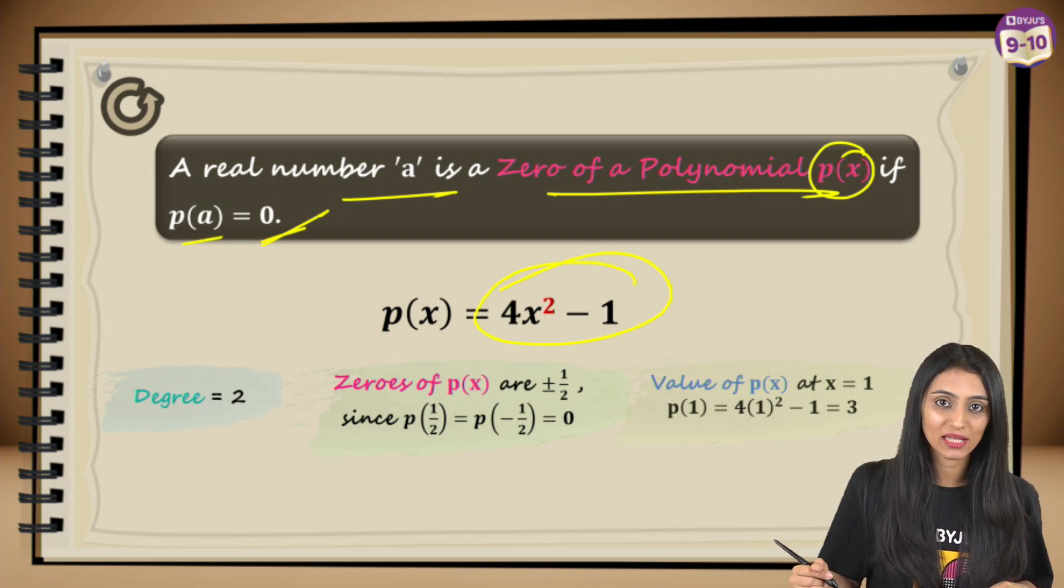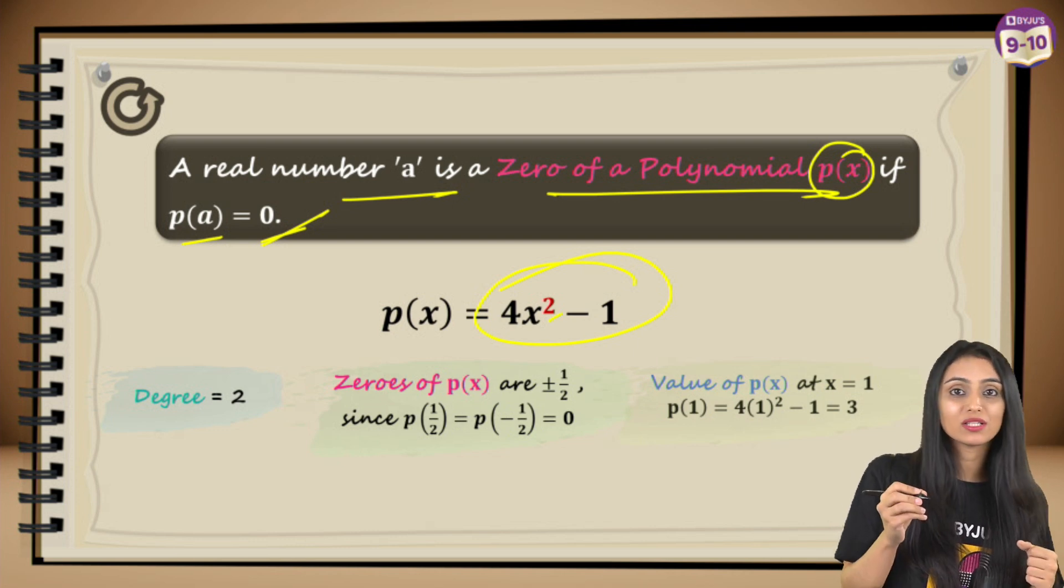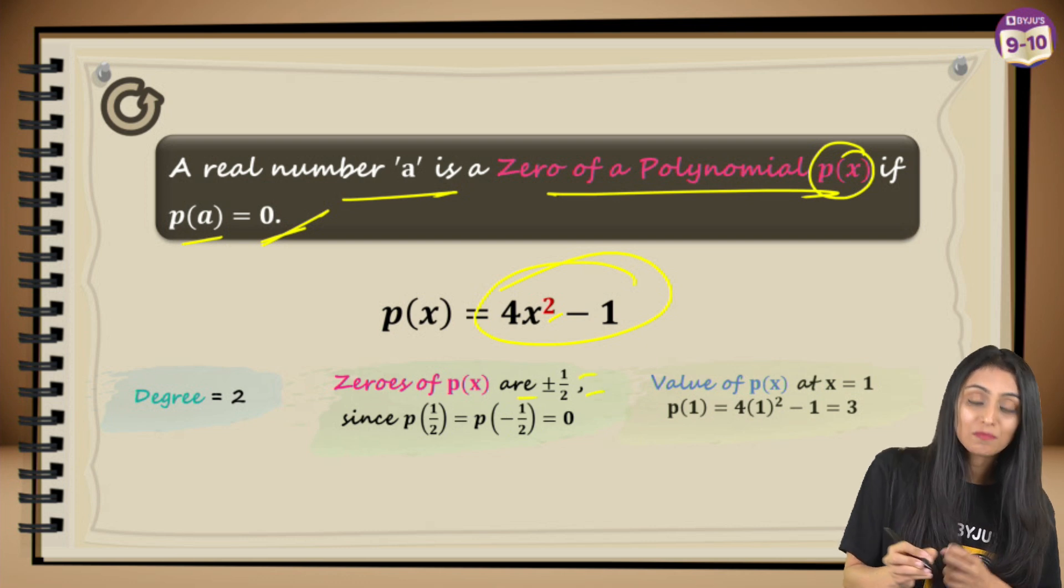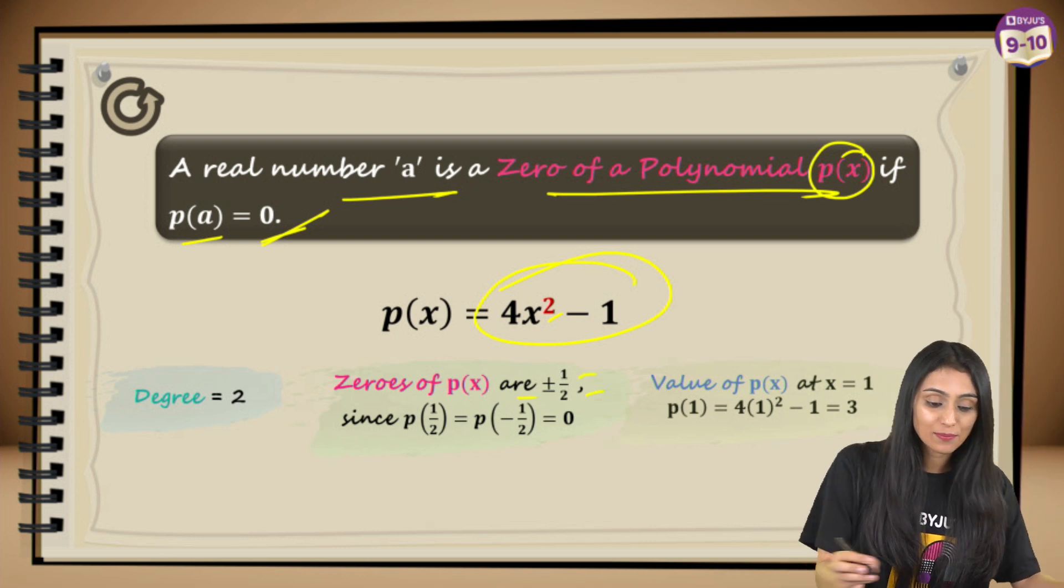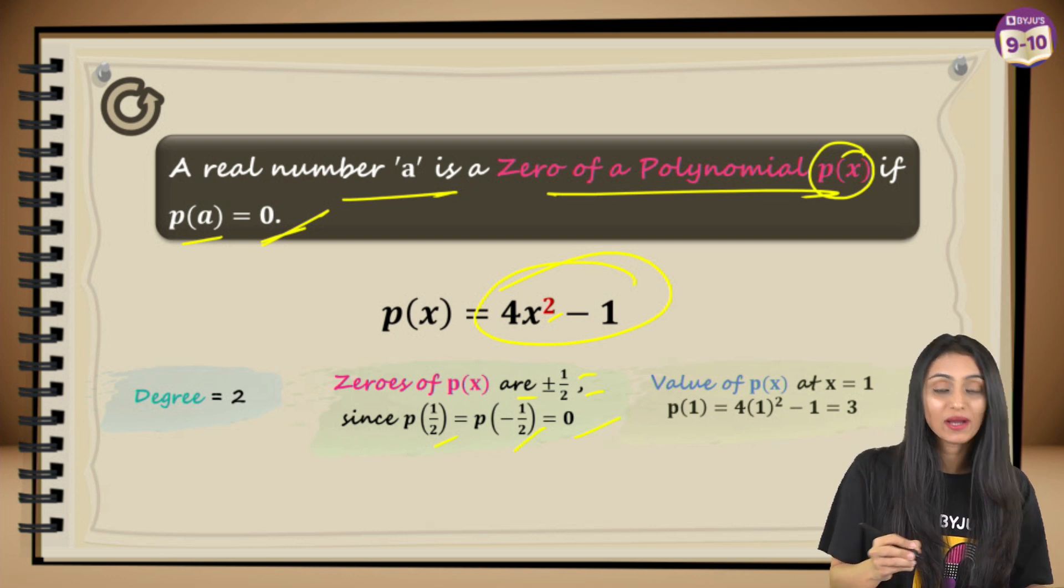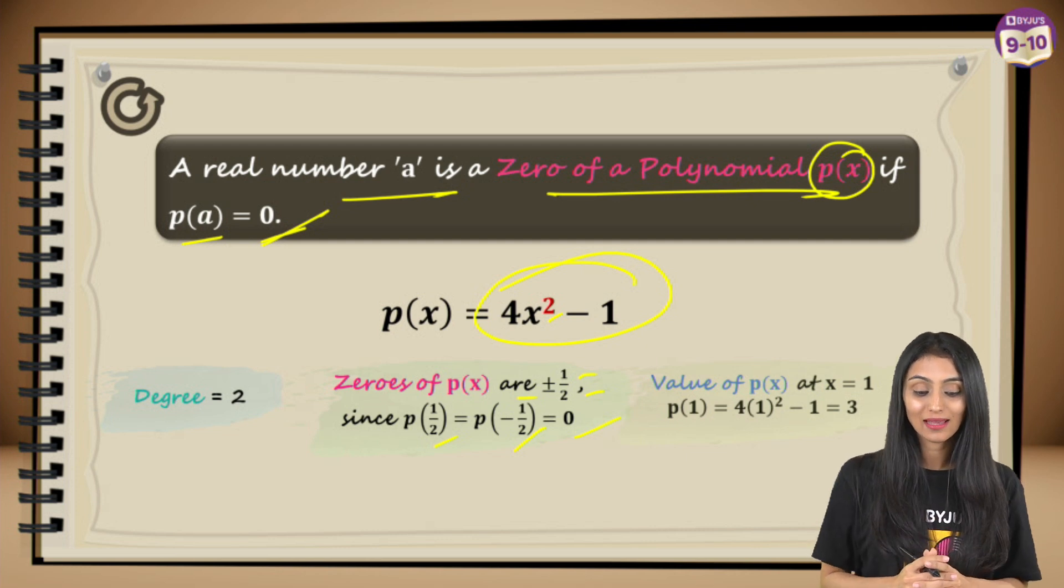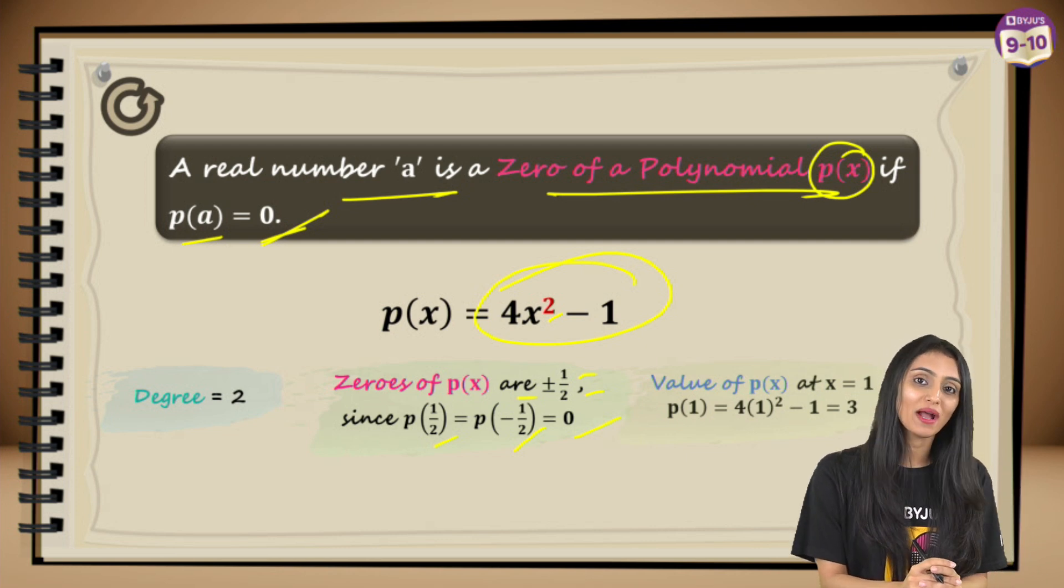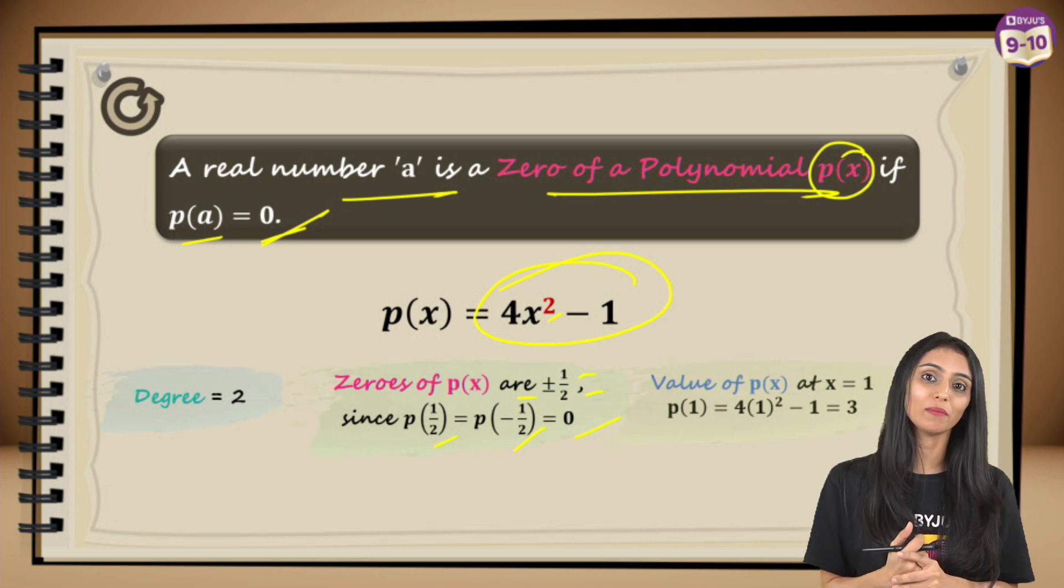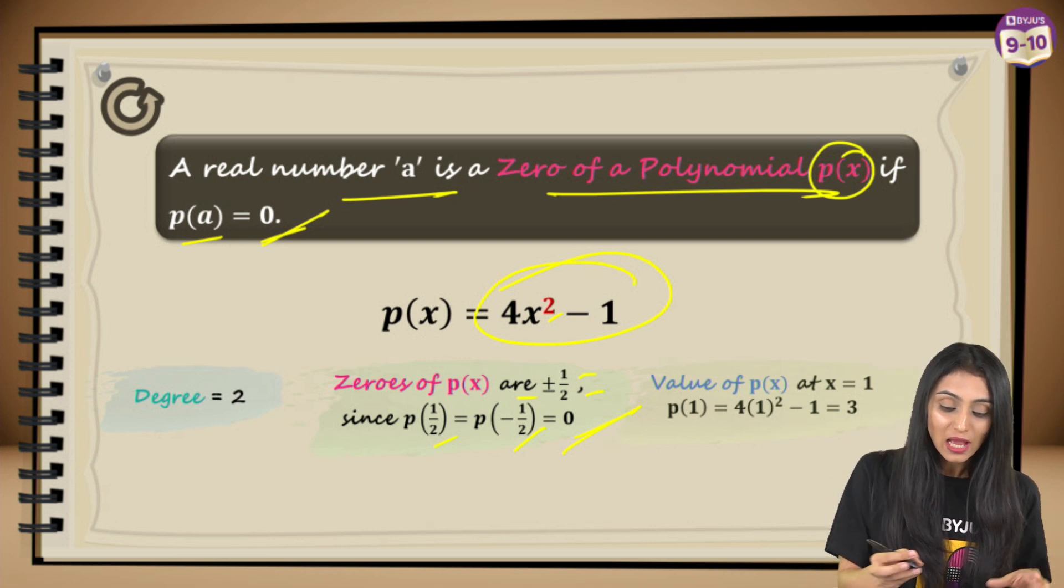To understand this better, take a look at this example. We have this polynomial p(x) = 4x² - 1. Variable is x here. We can see that the degree is 2 - degree means the highest power of the variable. It is quadratic, so zeros are ±1/2. Let's substitute 1/2 - I get the value of the polynomial as zero. -1/2 also gives me the value of the polynomial as zero. Since +1/2 and -1/2 on putting them and replacing x, I get zero, so these are the zeros of the polynomial.